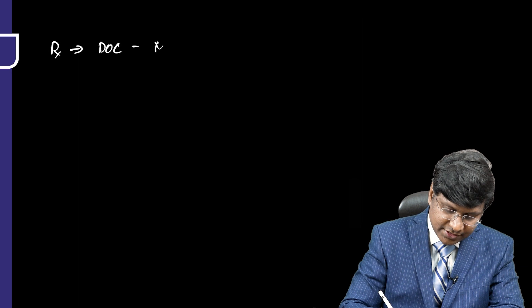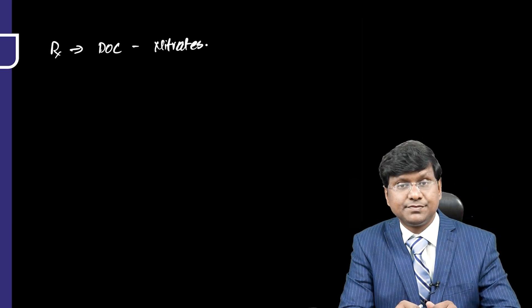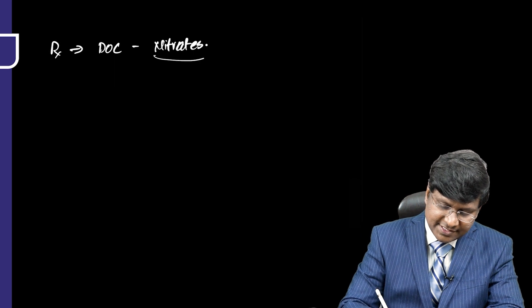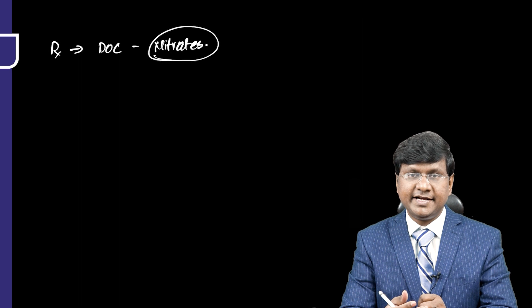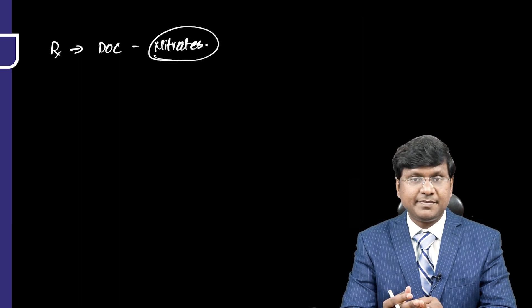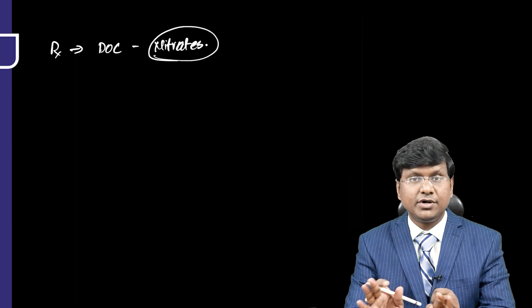What is the drug of choice? The drug of choice will be the nitrates. But one point is that nitrates have some contraindications. Systolic blood pressure less than 90 millimeters of mercury or when the patient is taking phosphodiesterase 5 inhibitors like sildenafil, you should not give nitrates.